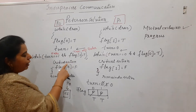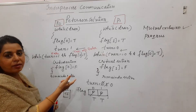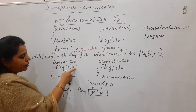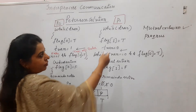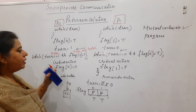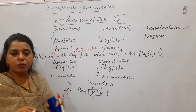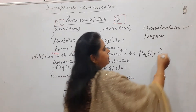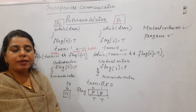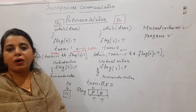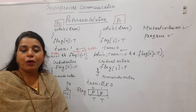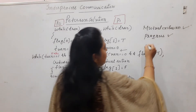P0 enters the critical section. When leaving, it sets its flag back to F. Once P0's flag becomes F, P1 can smoothly carry out its execution. There is no deadlock — progress is achieved. Now let us check whether bounded waiting is also satisfied.